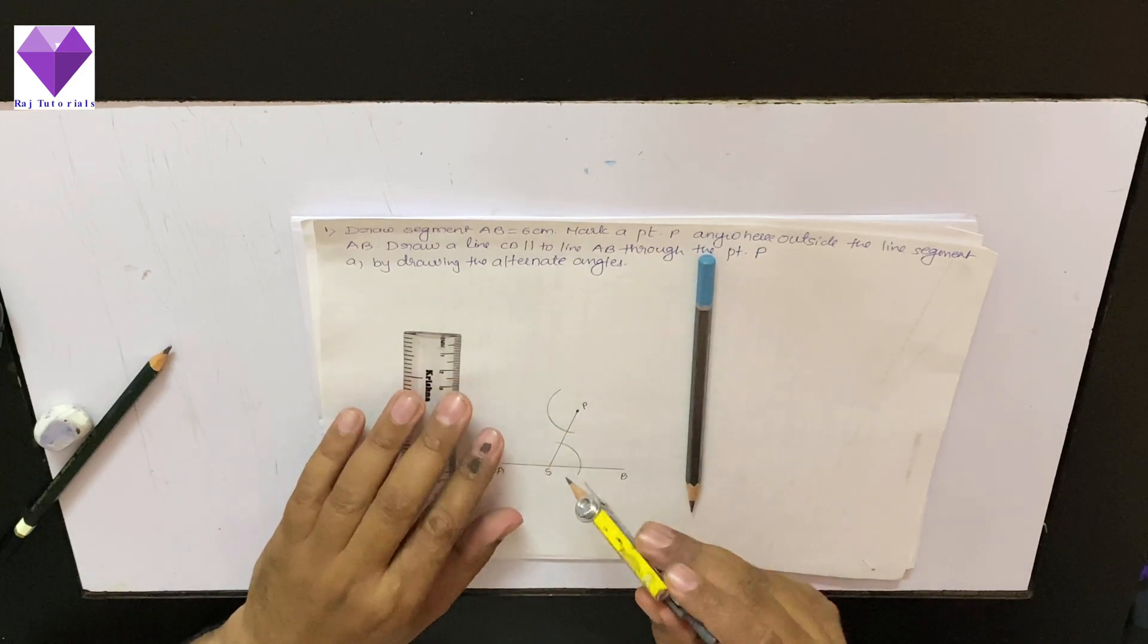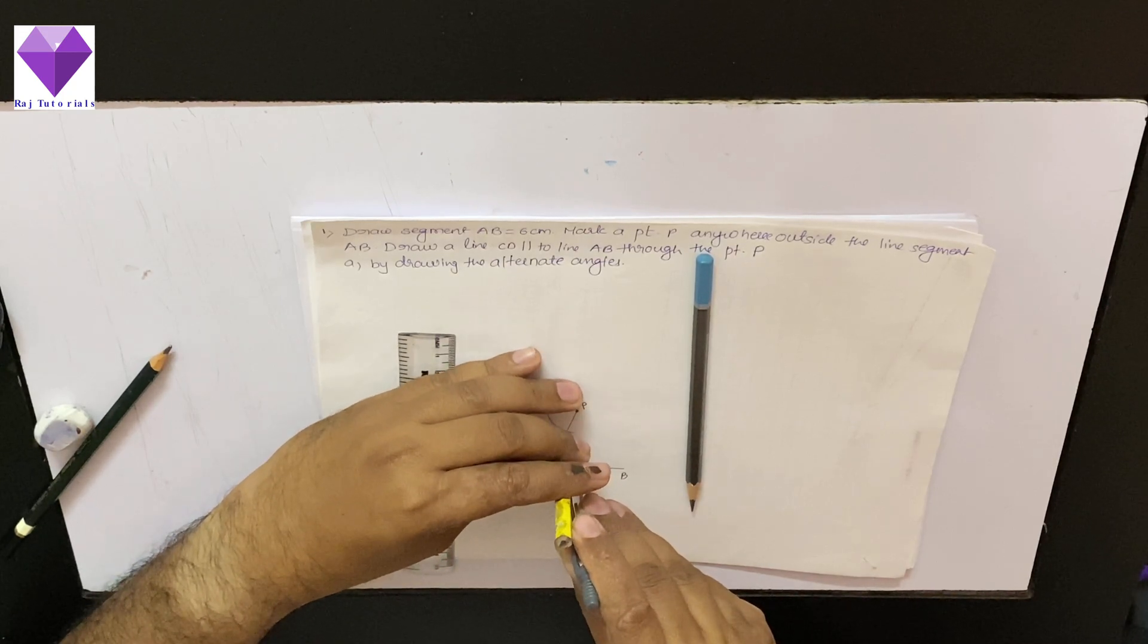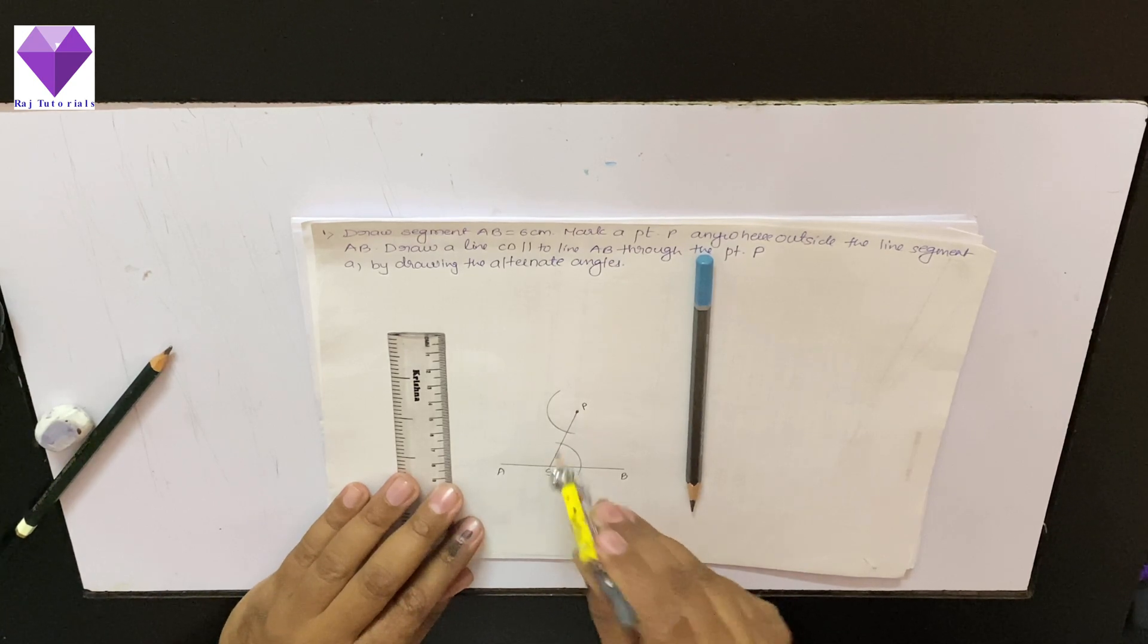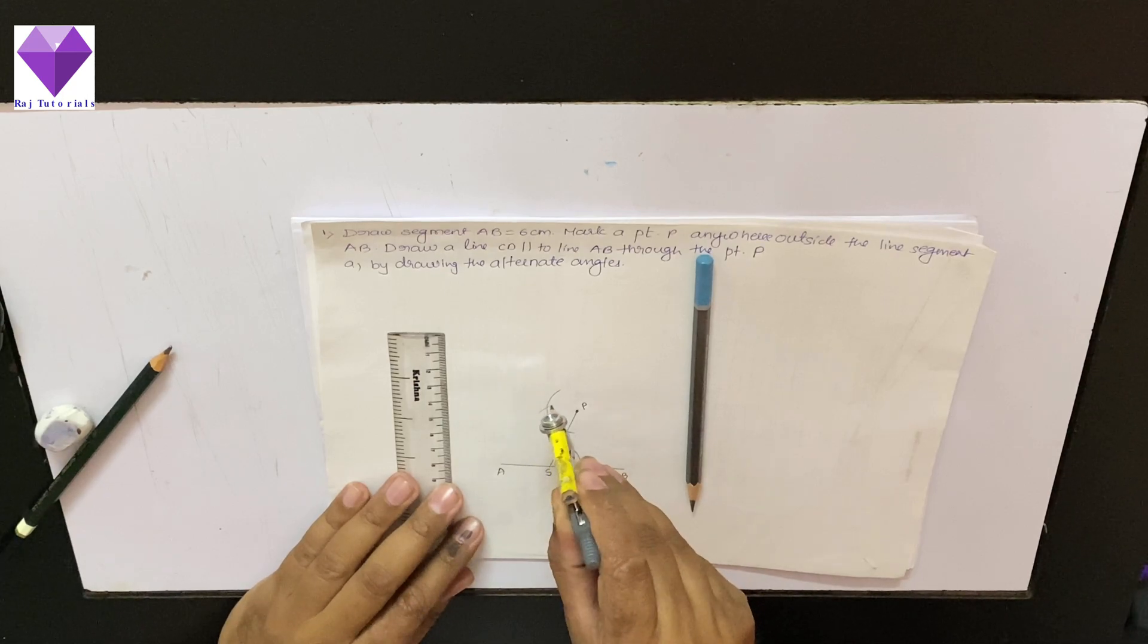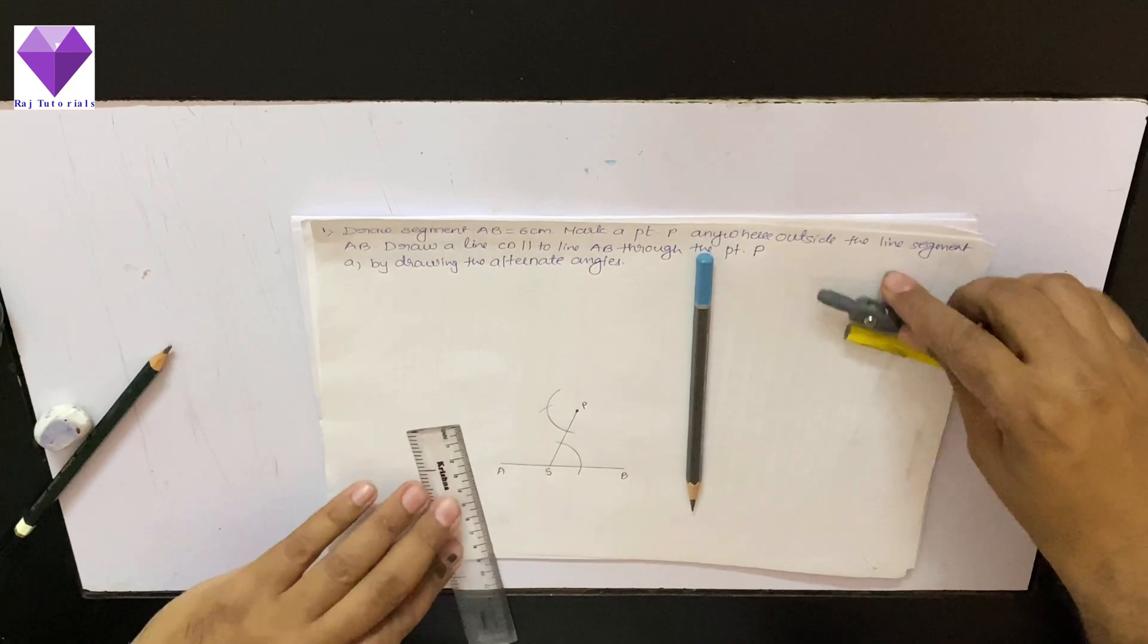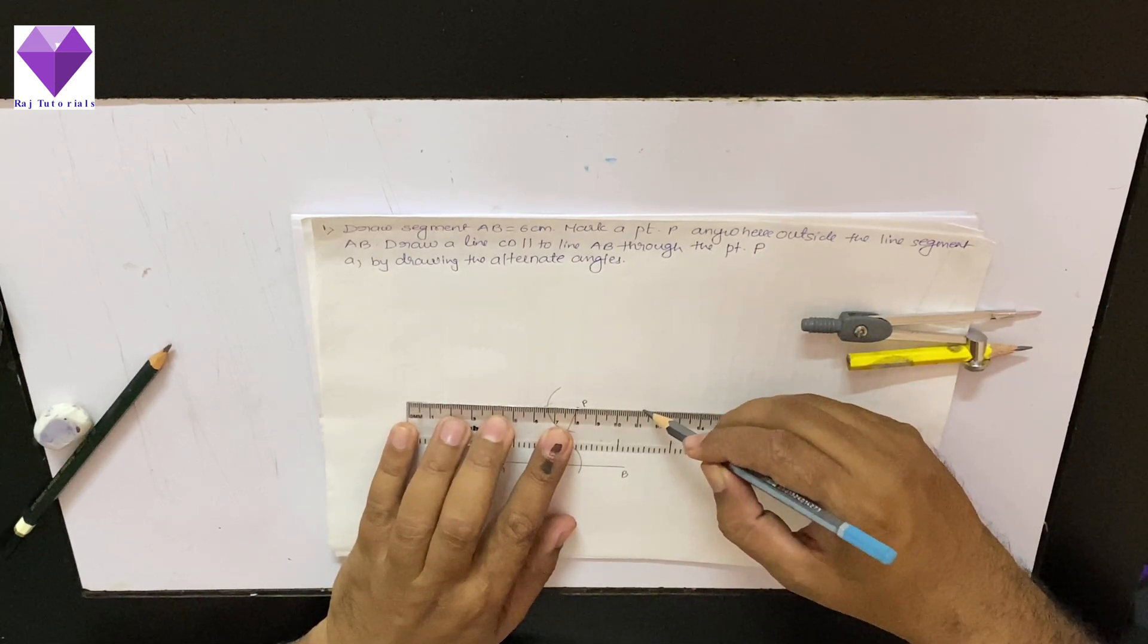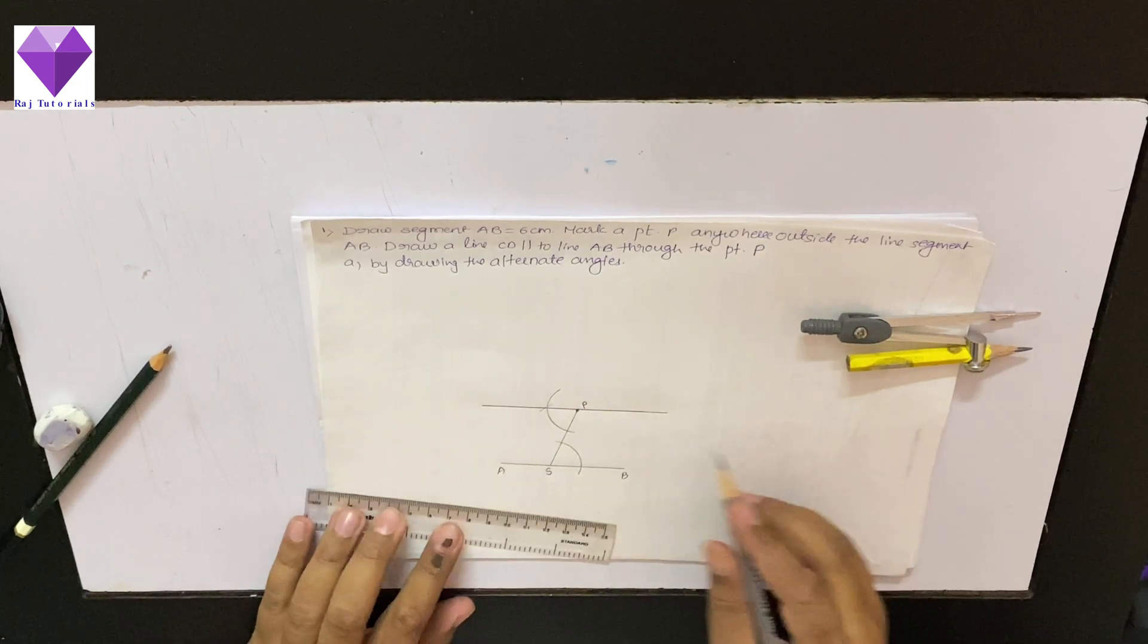Now, I will measure the gap of these two lines or the arc and with this point I will mark an arc. Now, I will join P and that mark to get the line segment CD parallel or line CD parallel to the given line.